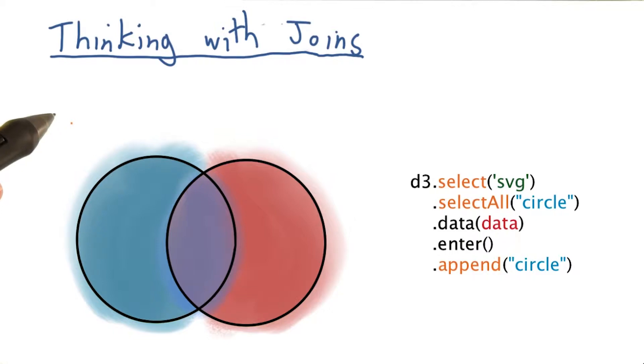Just wrapping things up here, I want to cover a few of the other special selections besides dot enter, using a Venn diagram that Mike Bostock uses in his great blog post, Thinking with Joins.